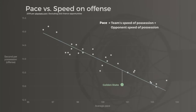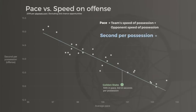The 2019 Warriors ended up with the third fastest offense, but the tenth fastest pace because teams took a long time trying to score on their defense. Pace is generally a great measure of game speed, but time of possession data when available is even more accurate.